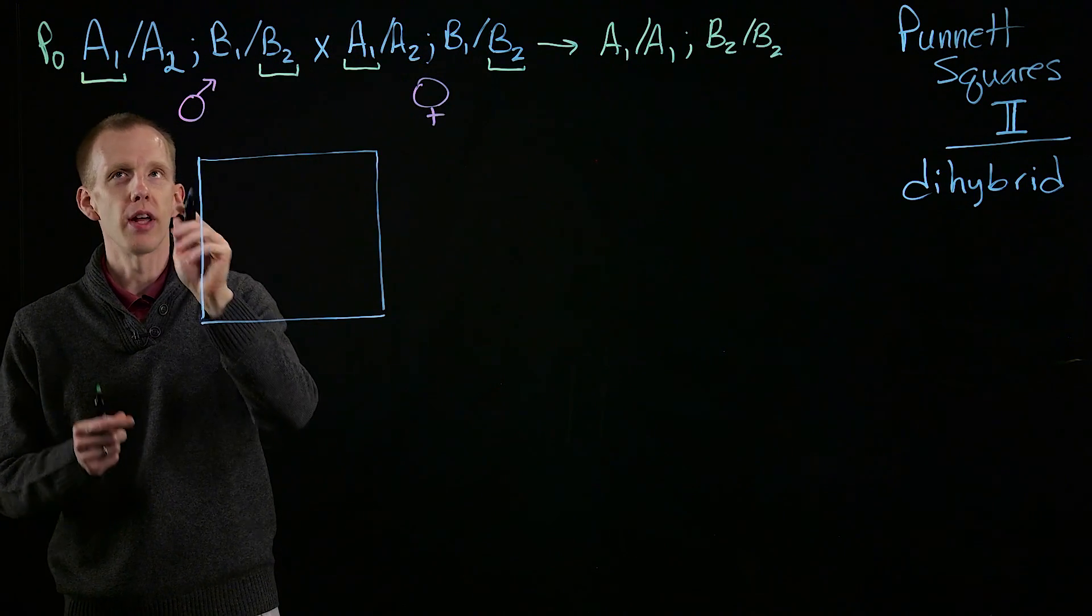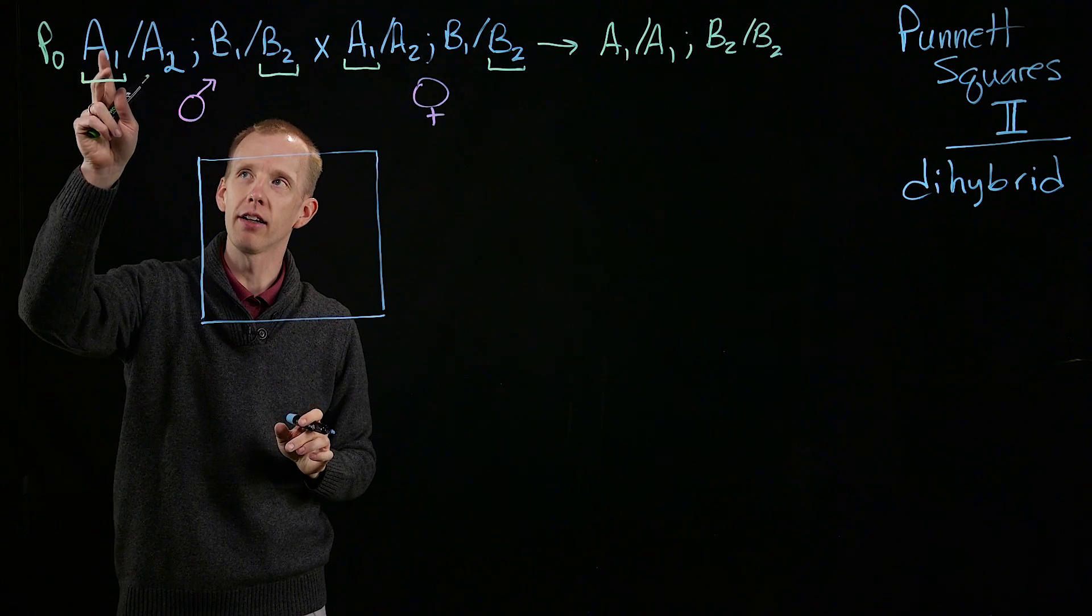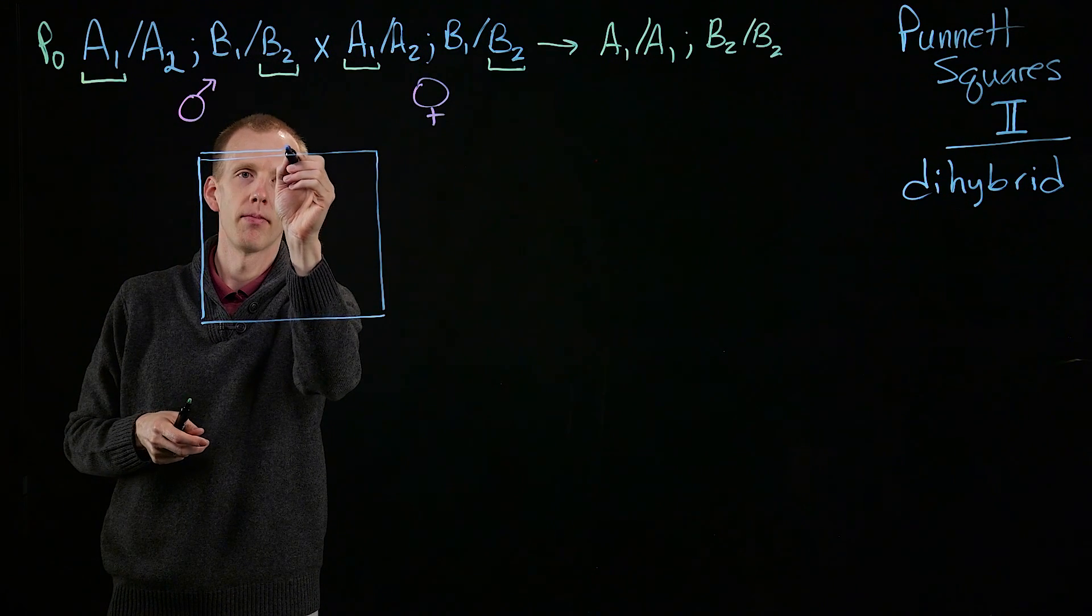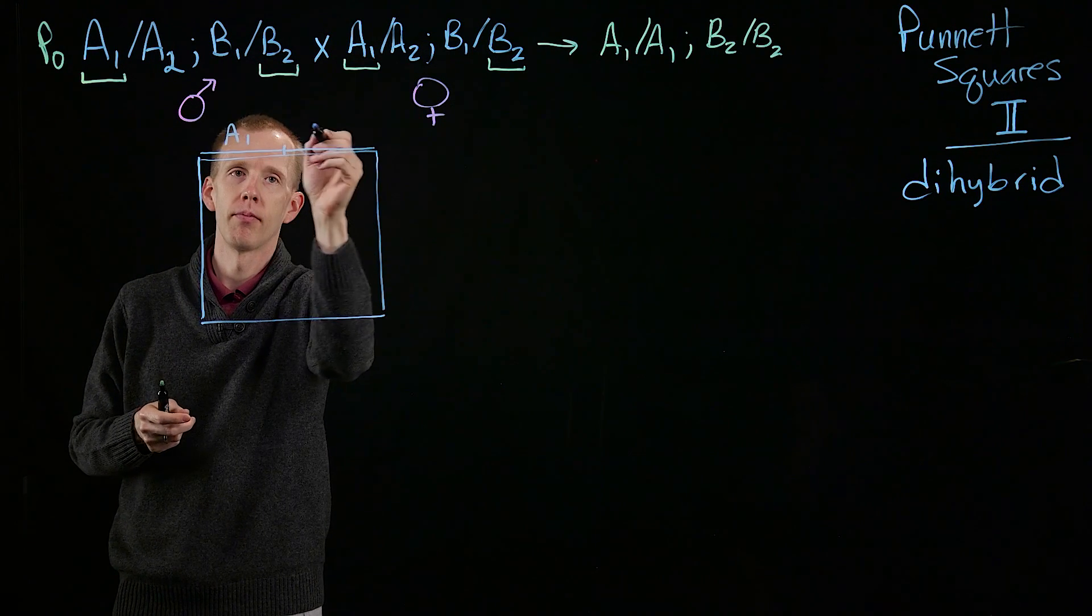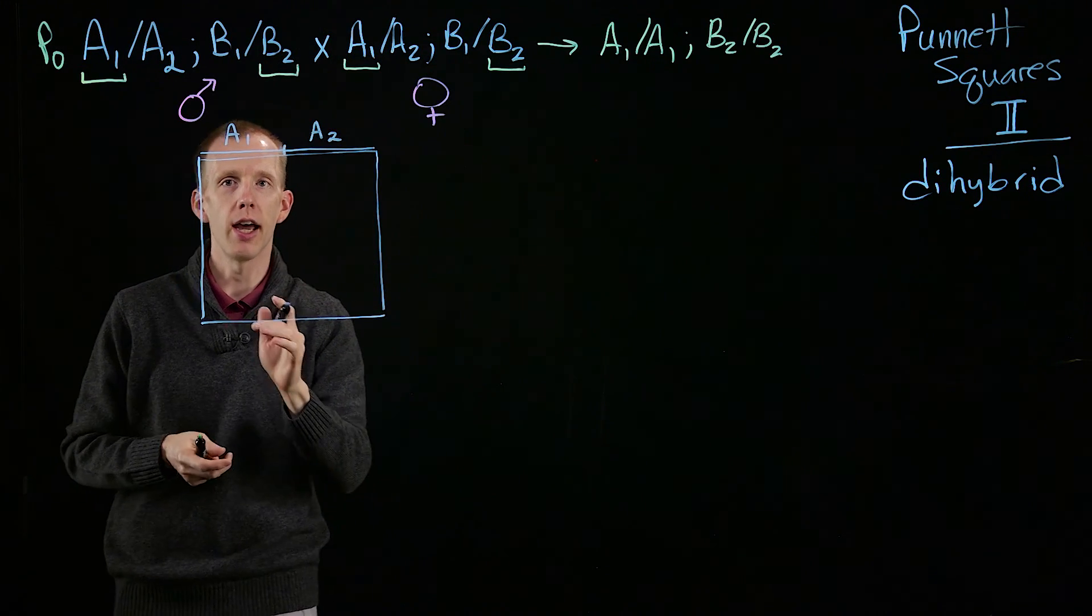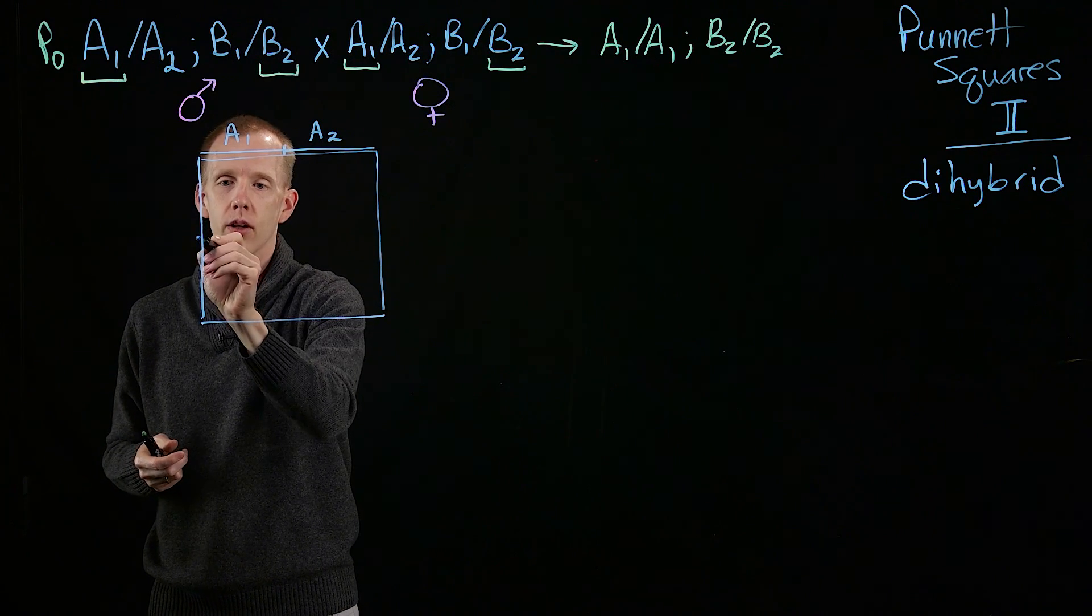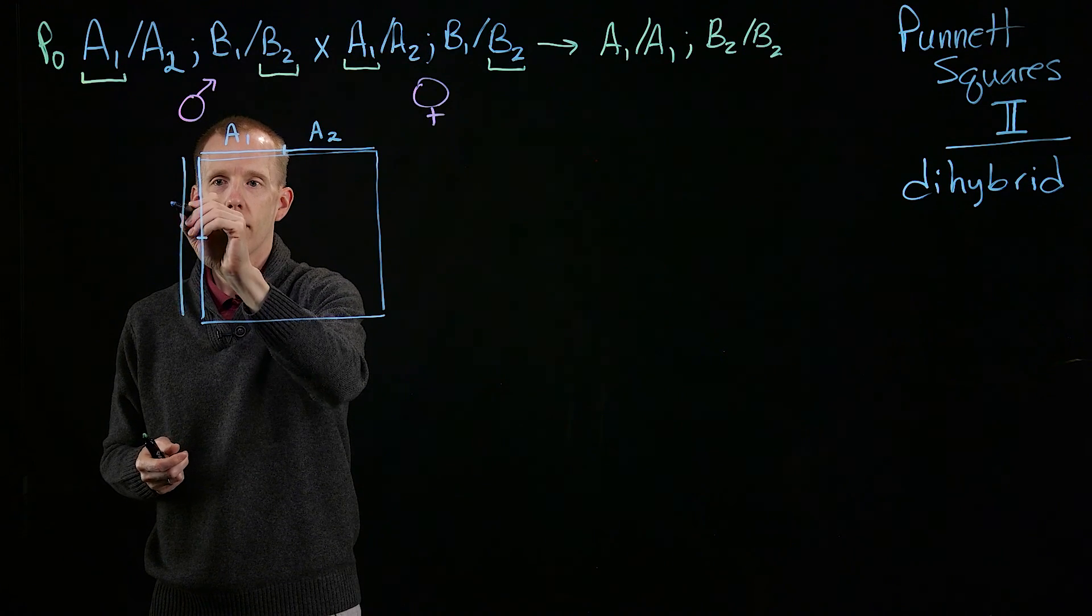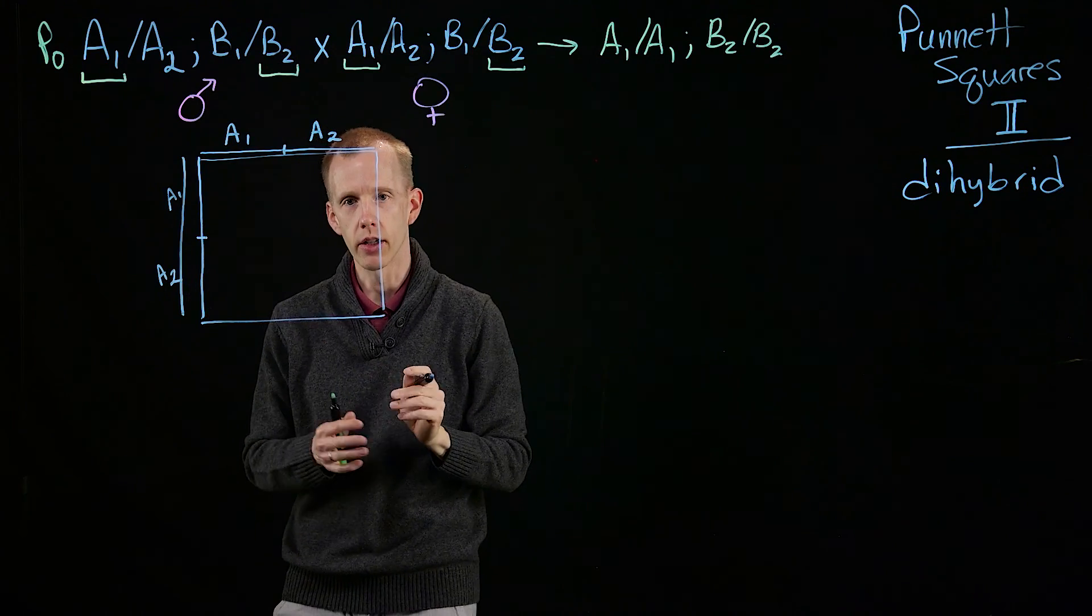So now we know that for a single locus, half of the gametes are going to contain allele 1 of gene A. This is like a monohybrid Punnett square, and the other half will have allele 2 of gene A. And the same will be true for the other parent, because it has the same genotype. So we can divide that Punnett square in half. For that chromosome, half have allele 1, and half of the gametes will carry allele 2.